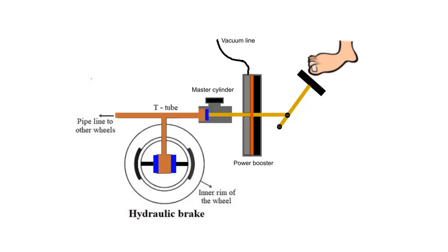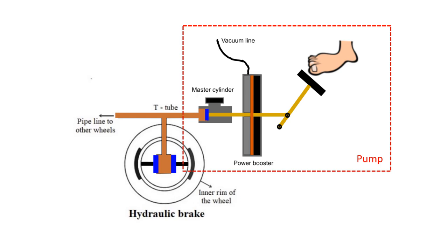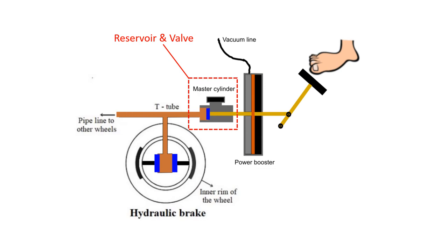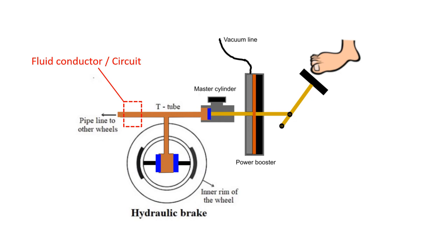Let's return to our car drum brake system and identify the key elements of a hydraulic system. We have our pump — in this case, a lever with a booster and a master cylinder. The oil reservoir and the valve are one unit, usually called a master cylinder. The fluid conductors are our brake lines, and our actuators are our brake cylinders.